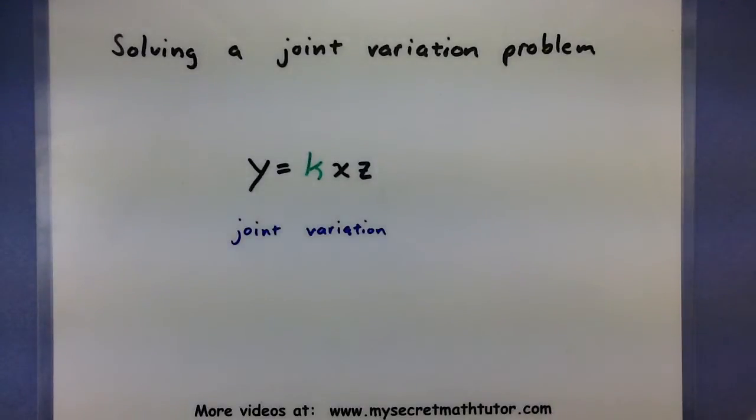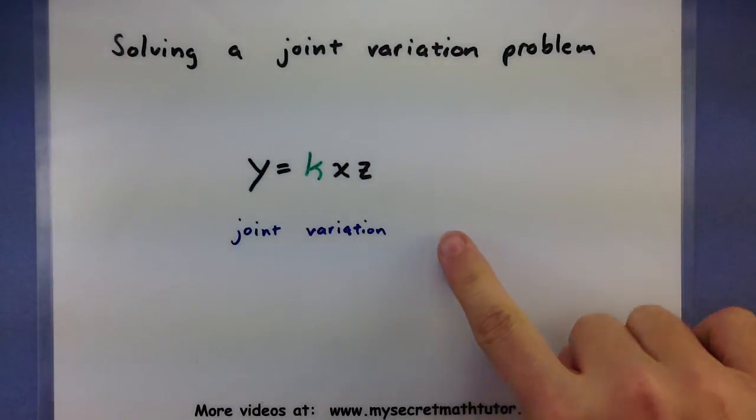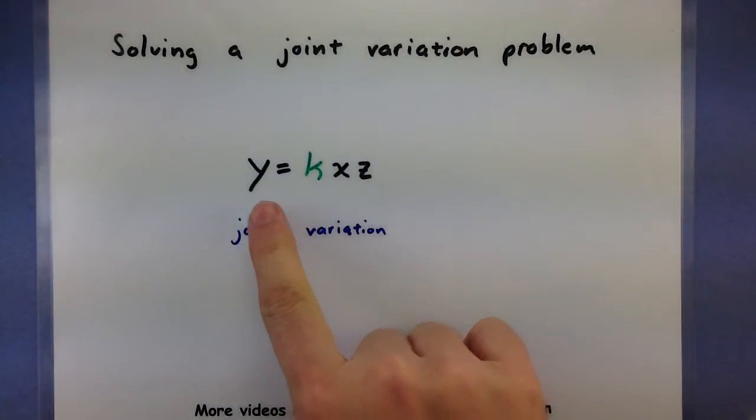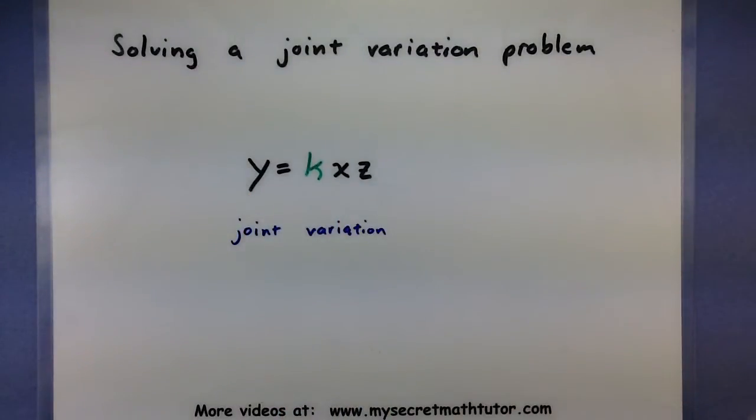Hello and welcome to MySecretMathTutor. For this video we're going to work on solving joint variation problems. Remember that in a joint variation problem it's a lot like direct variation when we're dealing with one, two, three different variables. So when one goes up, the other two will go up as well.